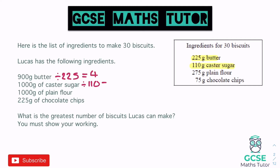For plain flour: 1000 grams divided by 275 grams equals approximately 3.63 — so the flour limits us further. For chocolate chips: 225 grams divided by 75 grams equals 3. So 3 is our limiting number — it's the lowest. The chocolate chips mean we can only make three lots of the recipe.